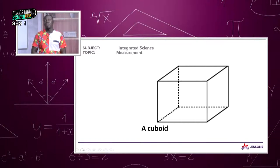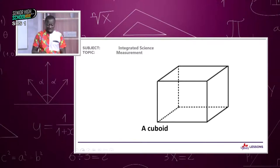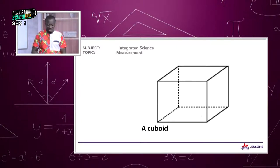On screen we have a typical diagram of a cuboid. It's a solid object where all sides are the same. To find the volume, you only need the dimension of one side and multiply it three times by itself.